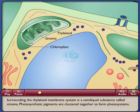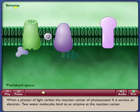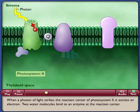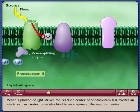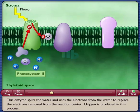Photosynthetic pigments are clustered together to form photosystems. When a photon of light strikes the reaction center of photosystem II, it excites an electron. Two water molecules bind to an enzyme at the reaction center. This enzyme splits the water and uses the electrons from the water to replace the electrons removed from the reaction center. Oxygen is produced in this process.